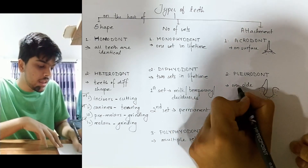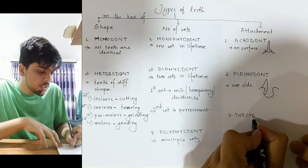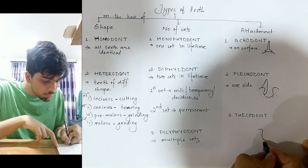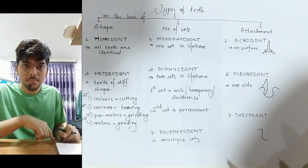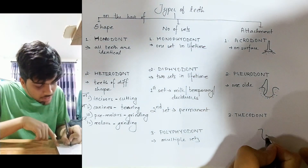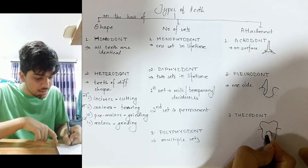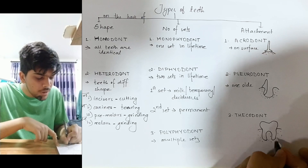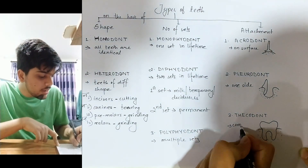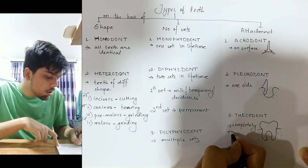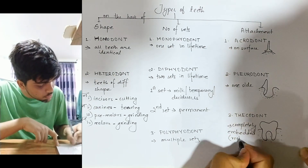Number three: Thecodont. In thecodont, the alveolar socket is present and the teeth are completely embedded within the alveolar socket, with roots going deep into the bone. This is a complete root attachment.